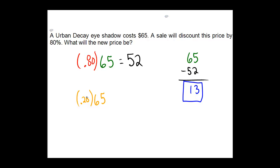Instead of figuring out the discount and then subtracting, you can actually look at the percent that you're retaining and multiply by that. 0.20 times 65, coincidentally, is also 13.